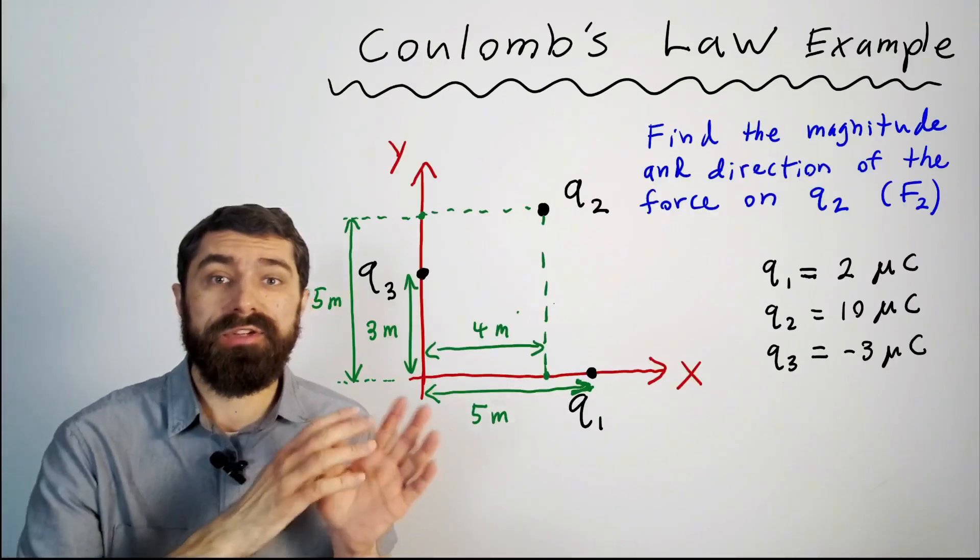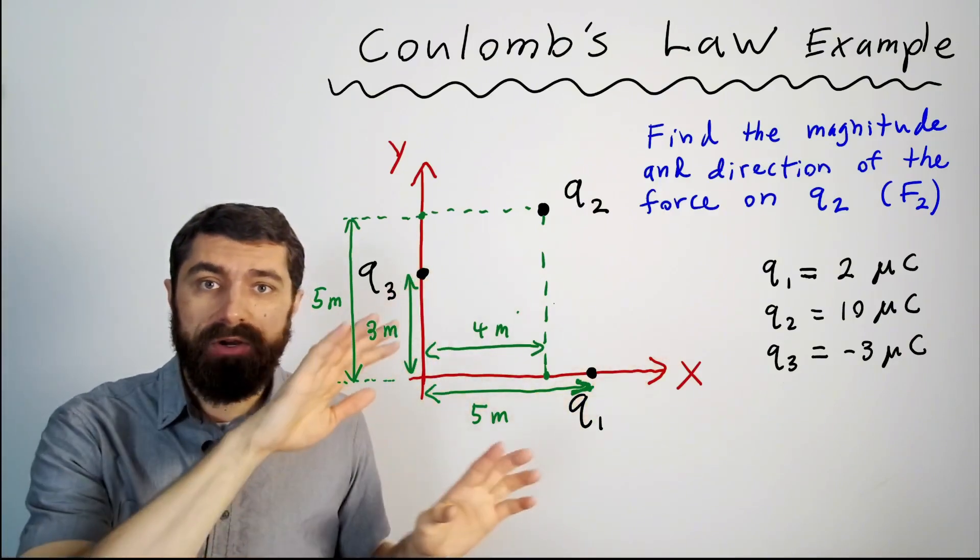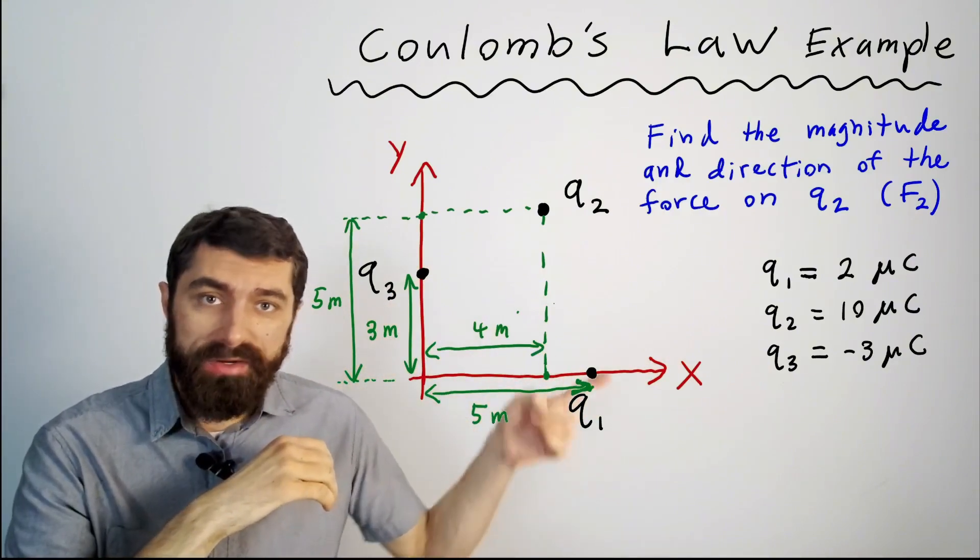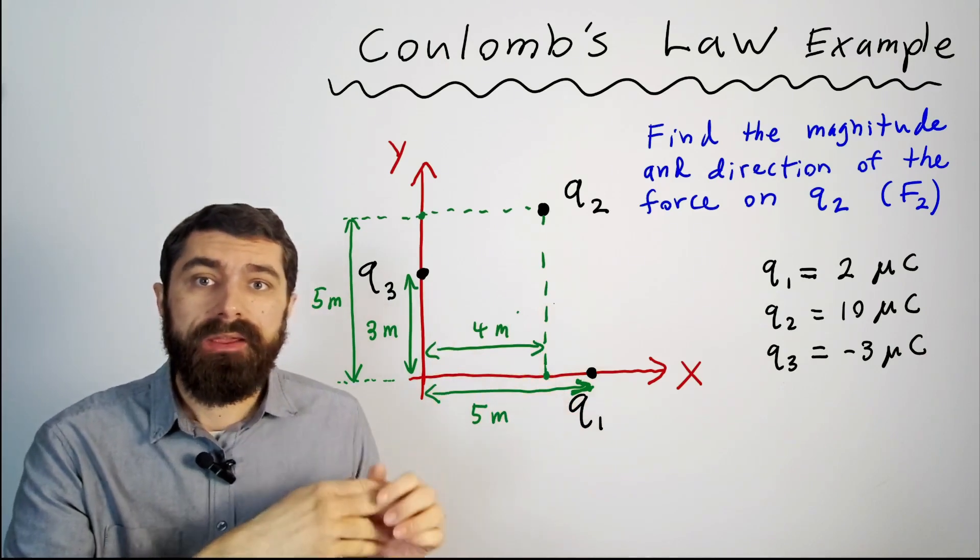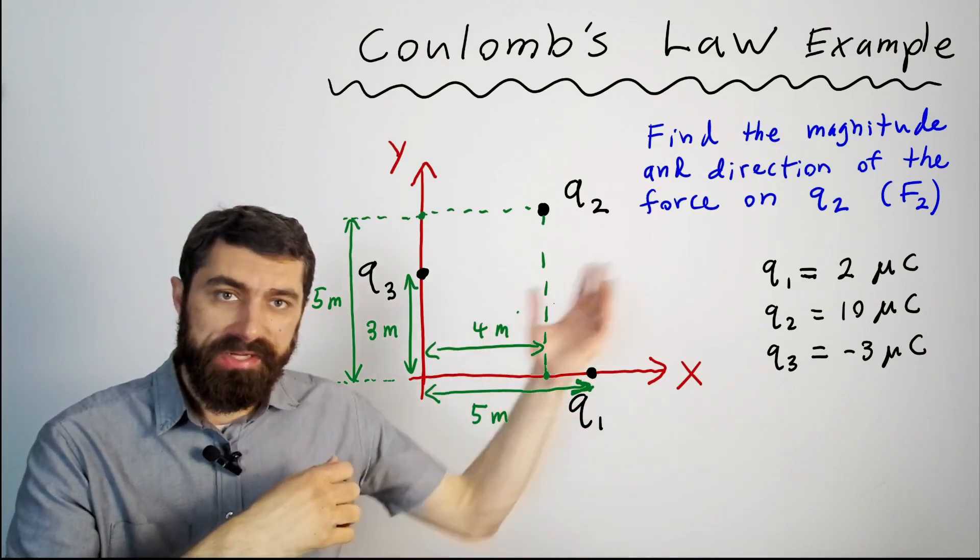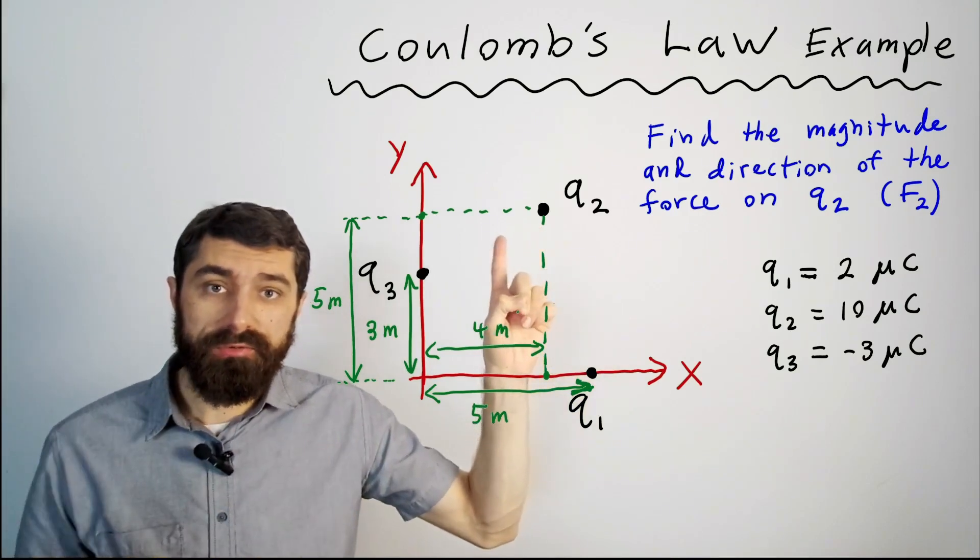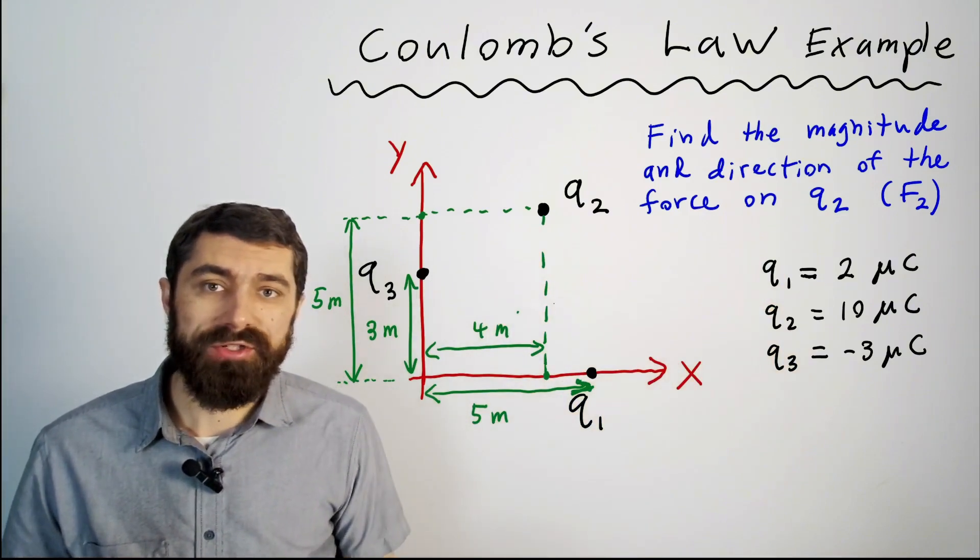Okay so here's our example. We've got a y-x coordinate system here and we have three different point charges: q1, q2, and q3. The problem is asking us to find the total force on charge q2 given these values for the point charges.